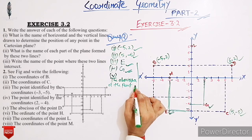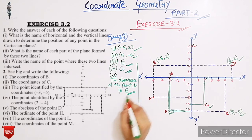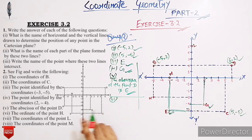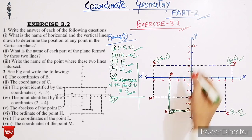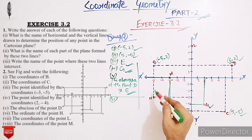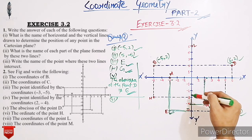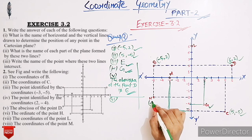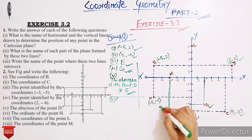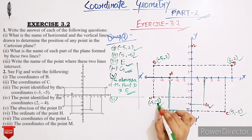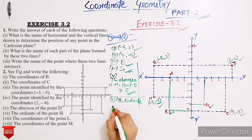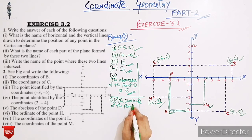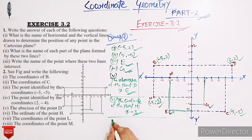Now next, we have to find the coordinates of point H. The distance of point H from the y-axis is 5 units and from the x-axis is 3 units. It lies in the third quadrant, so the coordinates of point H are (-5, -3).